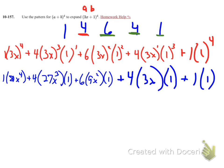So now my last step is just to simplify all of these terms. So my first term, everything up to that first plus symbol: 1 times 81x to the 4th is just 81x to the 4th.